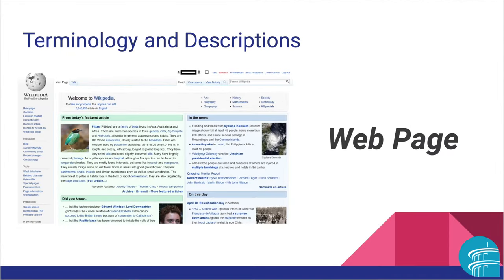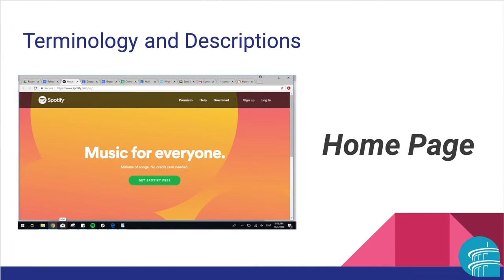A web page is an electronic document with text, images, and other content that is accessed by clicking a hyperlink from the results list in a web browser. A home page is the landing page, or page that first appears when accessing a website.